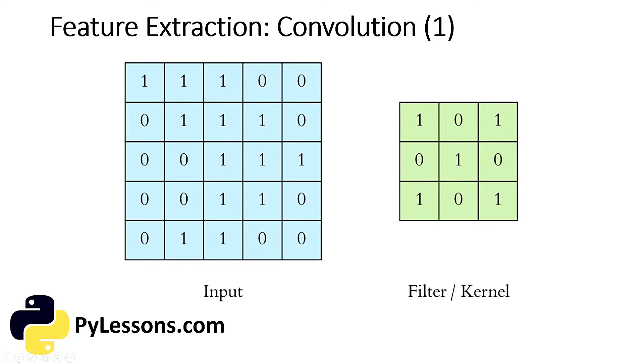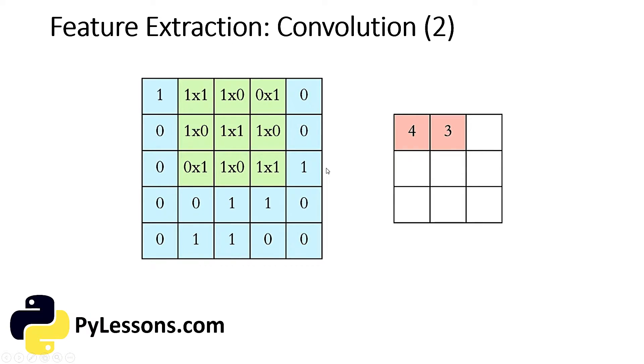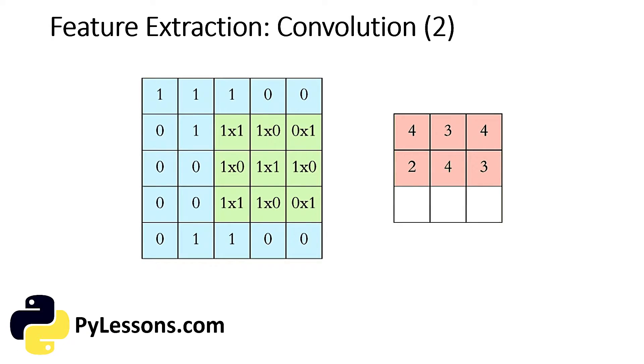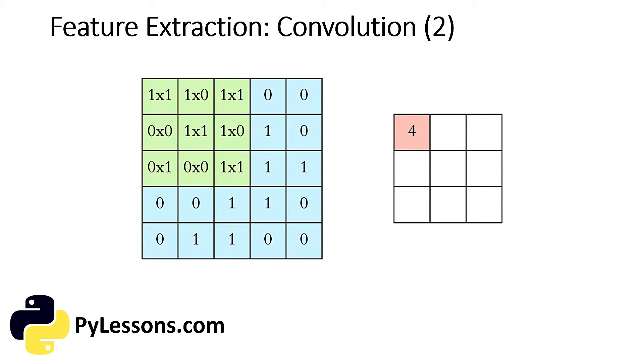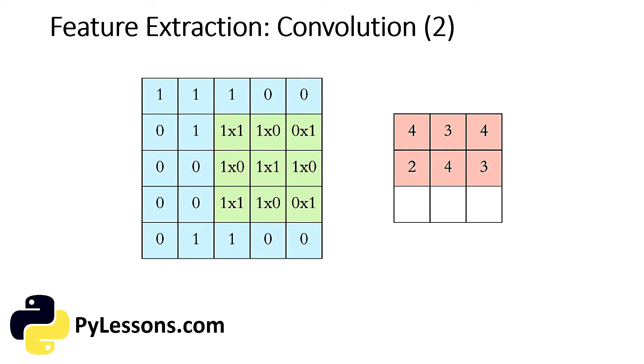Here the filter is green and the image is blue. The filter multiplies its own values with the overlapping values of the image while sliding over it and adds all of them up to output a single value for each overlap unit until the entire image is traversed.